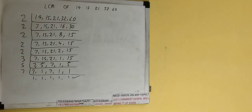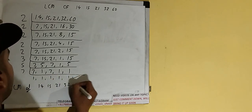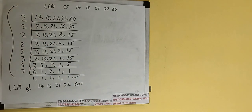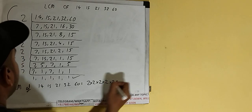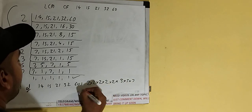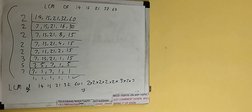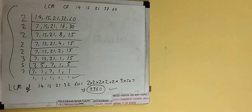Once we get all ones, we stop. The LCM of 14, 15, 21, 32, and 60 is found by multiplying all the divisors on the left-hand side: 2 × 2 × 2 × 2 × 3 × 5 × 7, which gives us 3360. So the LCM is 3360.